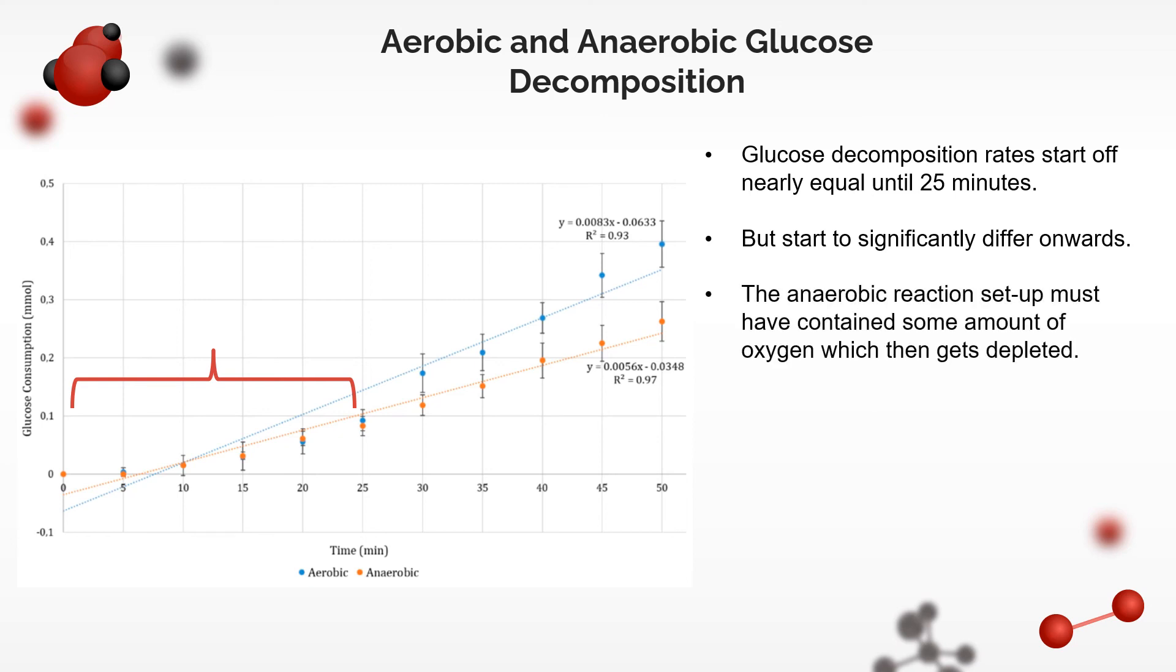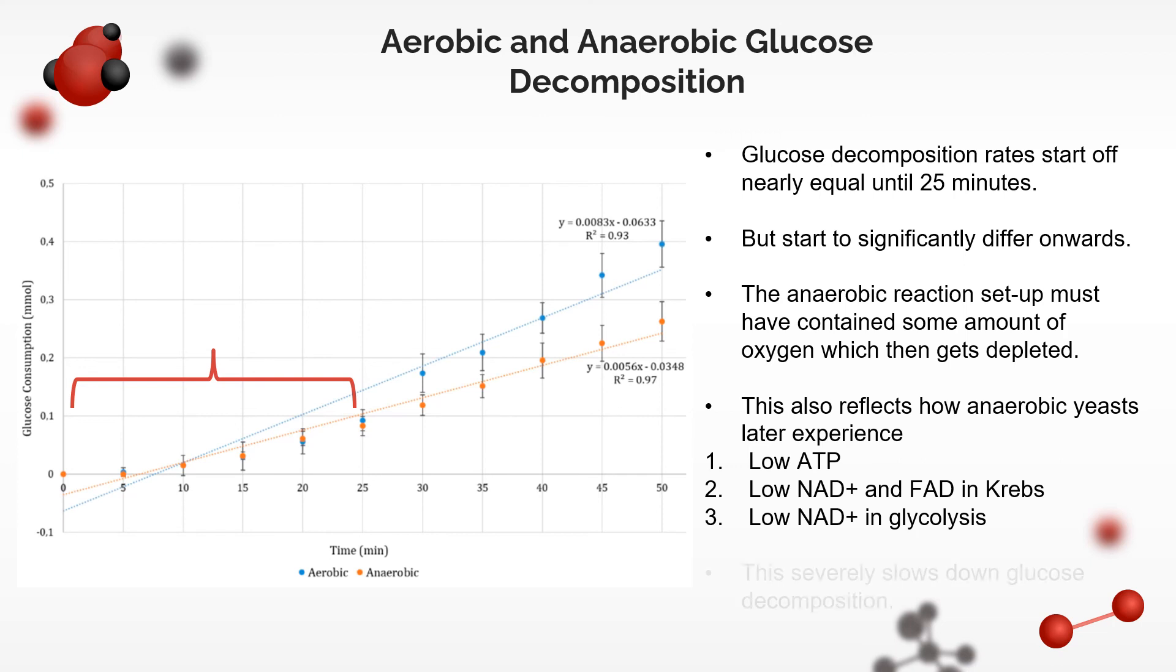But the initial equality may be due to two reasons. There must have been some oxygen in the anaerobic setup which eventually got depleted. And most notably, this reflects how anaerobic yeasts later experience three things: 1. Lowered ATP, due to the lack of oxidative phosphorylation. 2. Deficiency of NAD plus and FAD in Krebs cycle, shutting it down. 3. Deficiency of NAD plus in glycolysis, which severely slows down glucose breakdown. A linear regression gives a linear equation, wherein the slope represents the rate of glucose decomposition in millimoles per minute. For anaerobic, the estimate is 0.0056 millimoles per minute. While for aerobic, the estimate is 0.0053 millimoles per minute, greater than anaerobic.